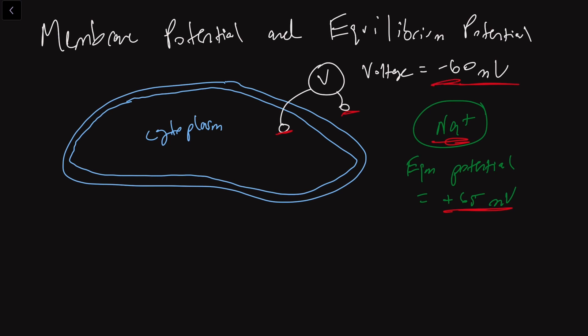And so what sodium wants to do is it wants to go into this cell right now because every time a sodium ion goes into our cell, we're going to increase this voltage or our membrane potential. And so by doing that, sodium is getting what it wants. And so sodium naturally is going to have this affinity or desire to want to enter our cells just like that.